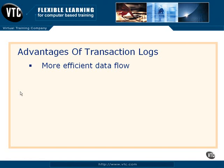When a checkpoint happens, the transaction log scans through its entries and looks for committed transactions. When a committed transaction is found, it's written into the database. Uncommitted transactions are not written in, and committed transactions are then flagged as inactive because they've already been written into the database. Transactions that are still not completed are considered active transactions. So this makes for a more efficient data flow.